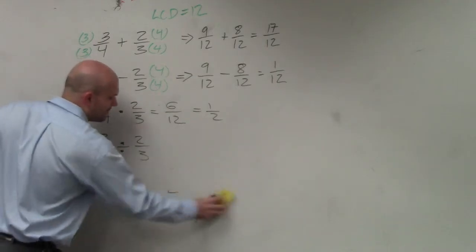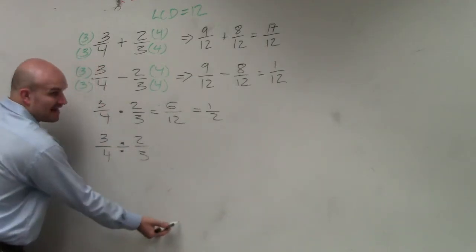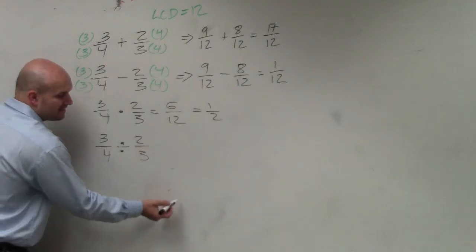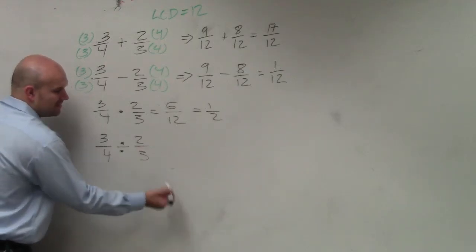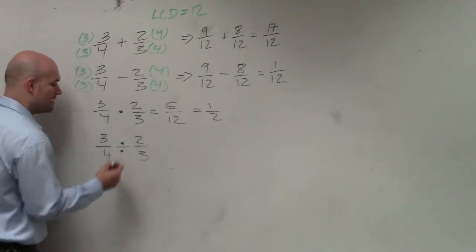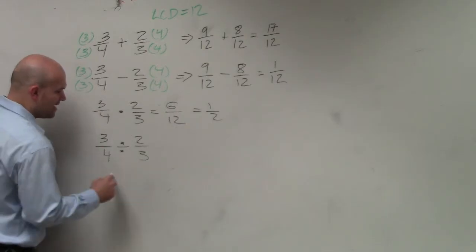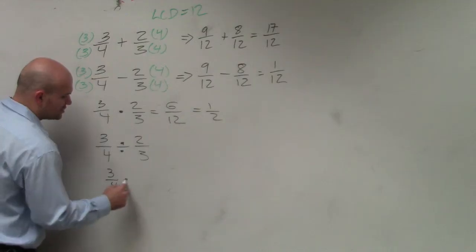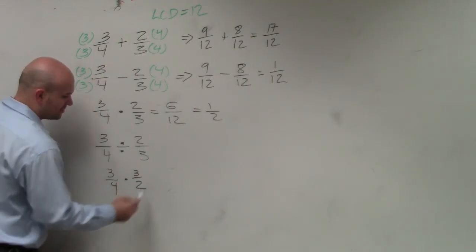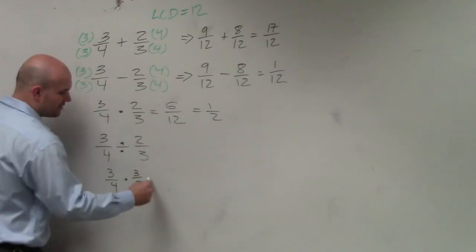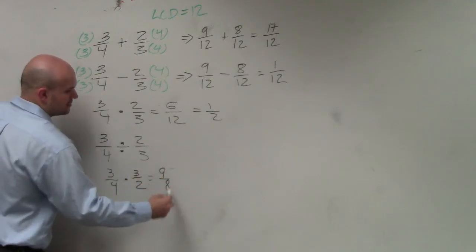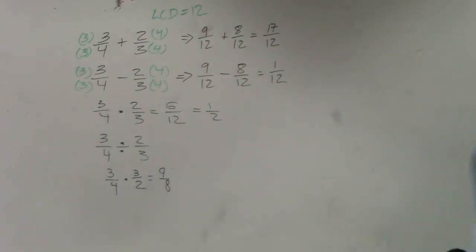So instead of dividing by 2 thirds, an easier operation would be, instead of dividing by 2 thirds, we could multiply by its reciprocal. So when you have division, you can change it to a multiplication problem, and then you can multiply across. And done. So when you're doing division, you reciprocate the divisor and then multiply.